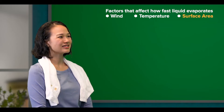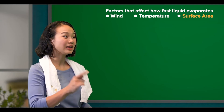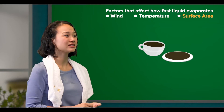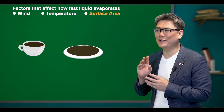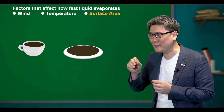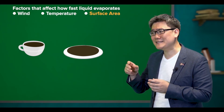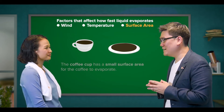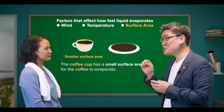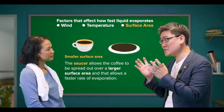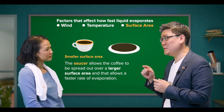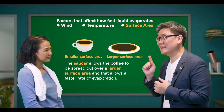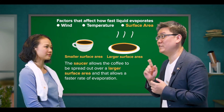That makes sense. In Singapore, people drink coffee by pouring it onto the accompanying saucer. I think the locals want to cool down the coffee to drinkable temperatures by letting some of the liquid evaporate. The coffee cup has a small surface area, while the saucer allows the coffee to be spread out over a larger surface area, allowing a faster rate of evaporation.